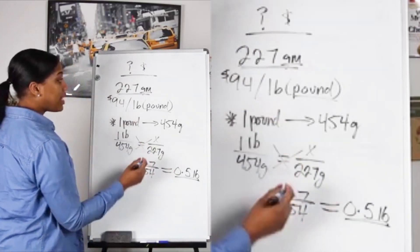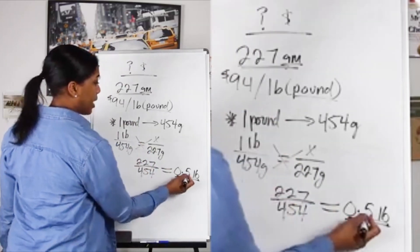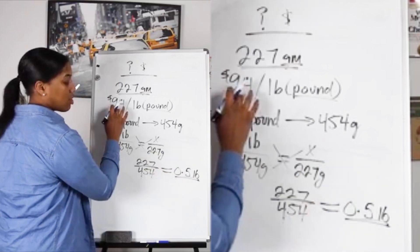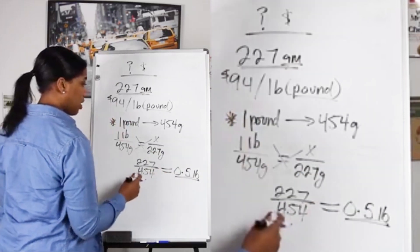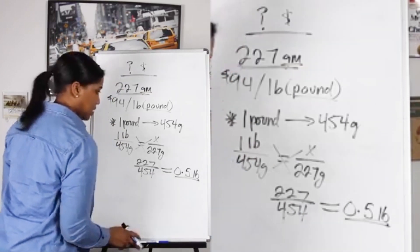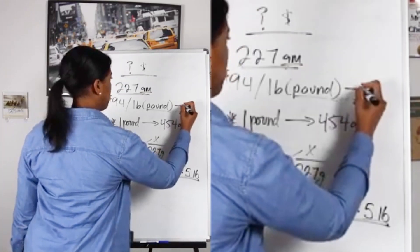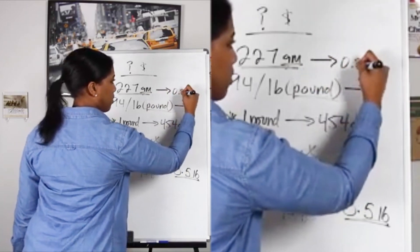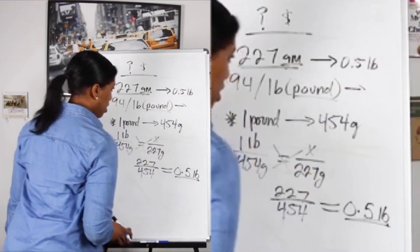Now we need to take this half of a pound and figure out how much this half a pound is going to cost us. So I'm going to write this fact here - we have 0.5 pounds.